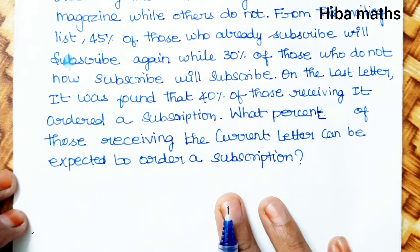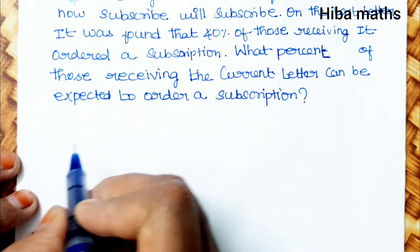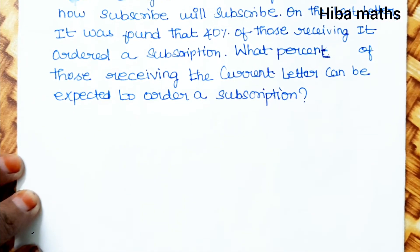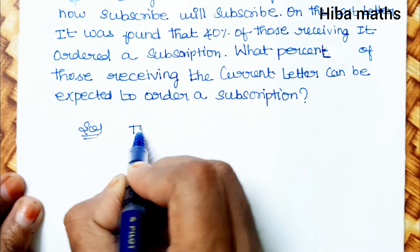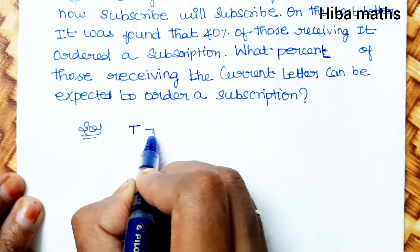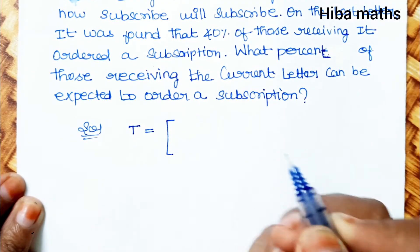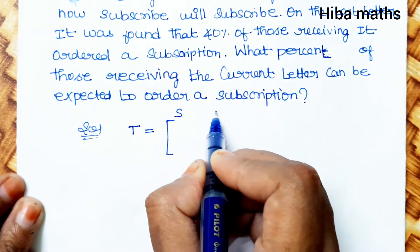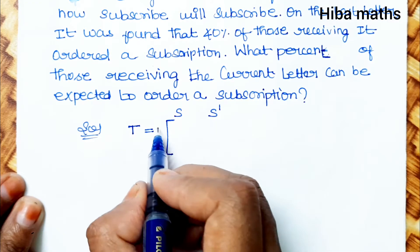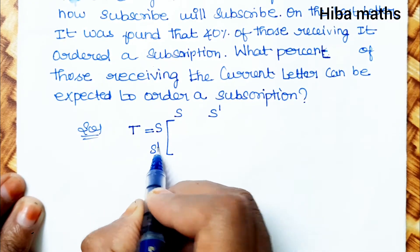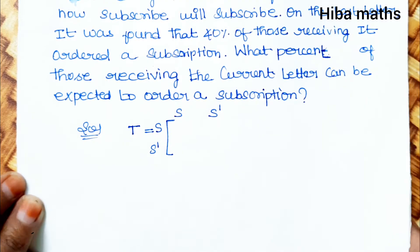So in the solution, we first find the transition probability matrix T. We define the states as S (subscribed) and S' (not subscribed).